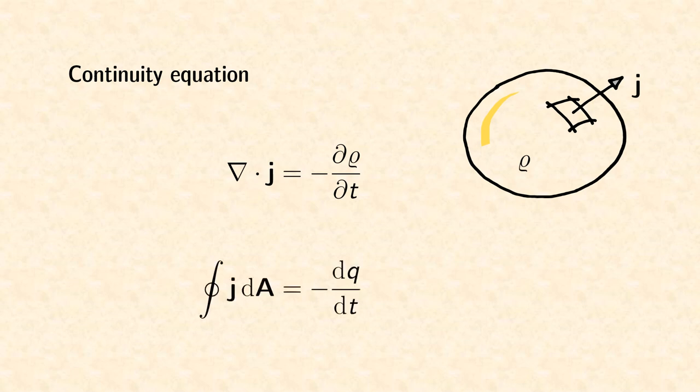So far, we derived the continuity equation in its differential form. When we convert it to its integral form, the meaning of the equation becomes obvious. The total electrical current crossing a closed surface of a volume on the left-hand side is equal to the change of the total charge inside the volume on the right-hand side.